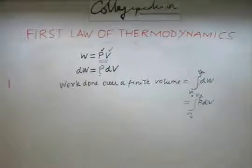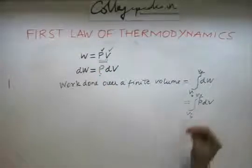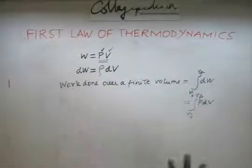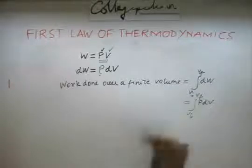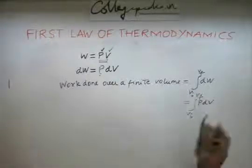So having said this, now I can tell you how P can be varied. This P can be a function of volume, this P can be constant, this P can be a function of anything else. So let us look at how we can evaluate this integral, because that is what is going to give the work done or the work done on the system.